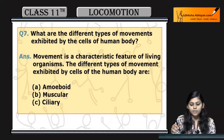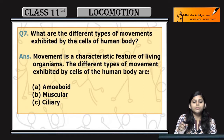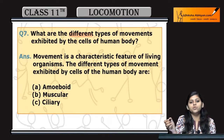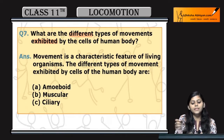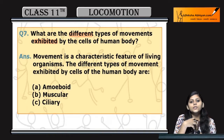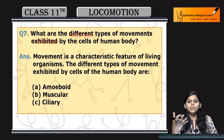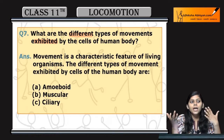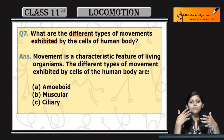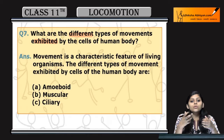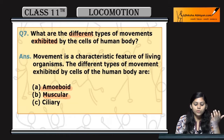Question number seven: what are the different types of movement exhibited by the cells of the human body? Our human body has a lot of different movements. The cells responsible for those movements include amoeboid movement, muscular movement, and movement at the cellular level.